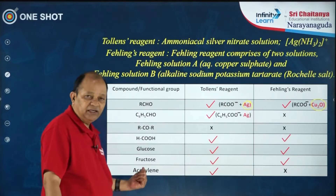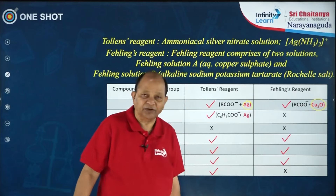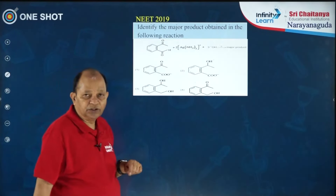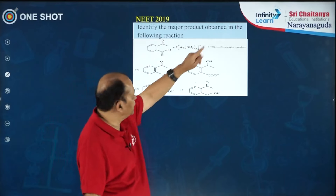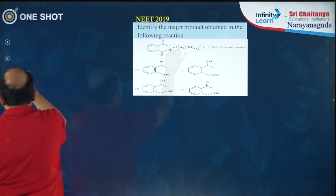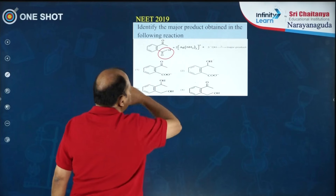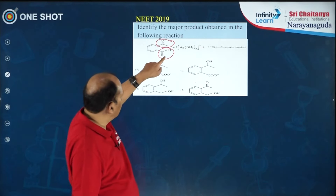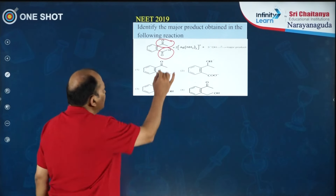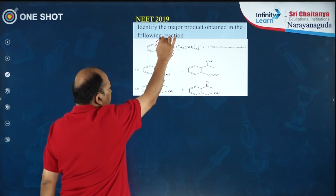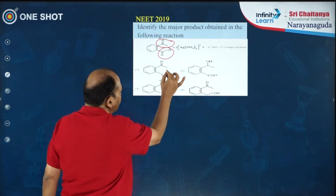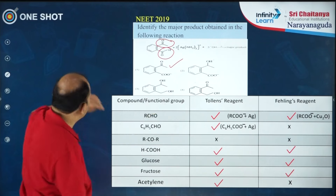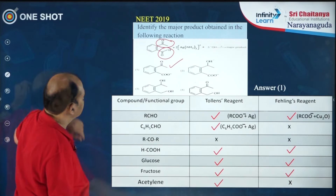Formic acid, glucose, and fructose all give both tests. Acetylene reacts only with Tollens' reagent (giving disilver acetylide) but not with Fehling's reagent. A question from 2019: the major product of a compound containing both an aldehydic part and a ketonic part reacted with Tollens' reagent — only the aldehyde part will be oxidized, not the ketonic part. Based on this, the answer is option 1.